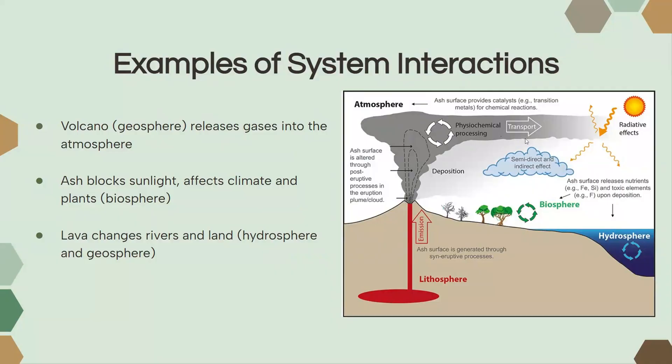Now, if our atmosphere is flooded with gases and volcanic ash, then that can start blocking sunlight from entering the Earth's surface and it can cause the climate to become cooler. And if the climate suddenly becomes a lot cooler, then it can affect the biosphere, or the living things.